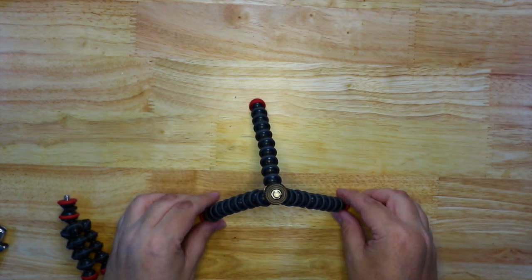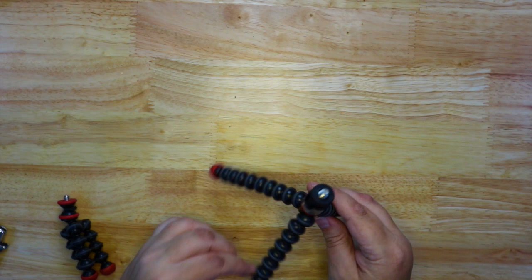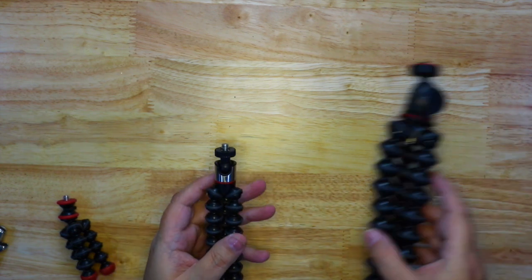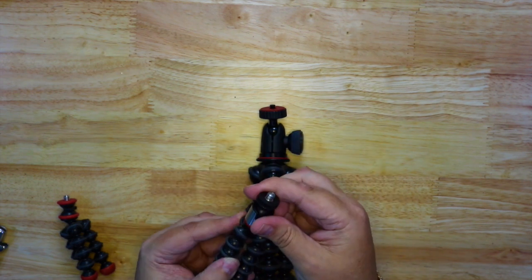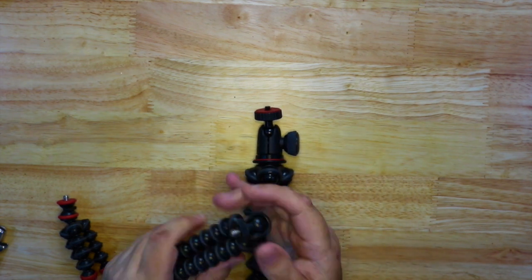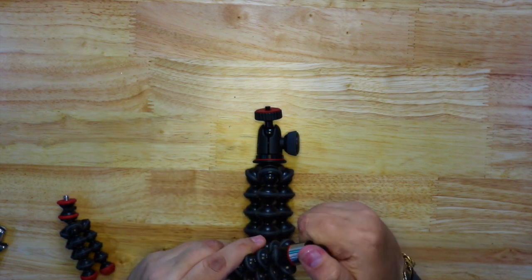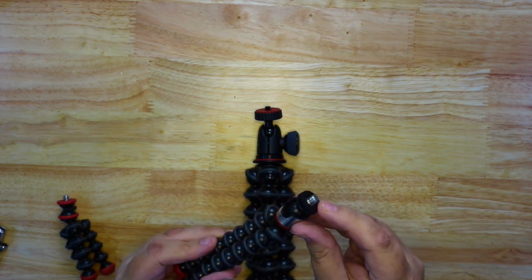So here are the legs. It's got nice long legs, almost three times the size of the Mini with the legs. This is it compared to the 1K. The Mini and this one are both 325 grams and the 1K is one kilogram.